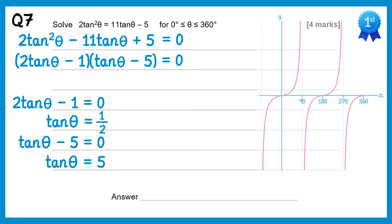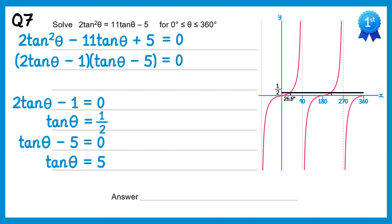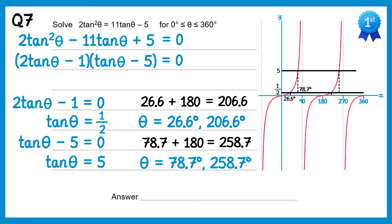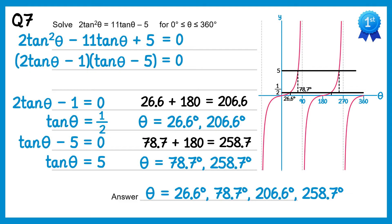Drawing the graph of tanθ and a line at 1/2: there are two solutions. Inverse tan of 1/2 gives 26.6 degrees, and adding 180 gives 206.6 degrees. For tanθ equals 5, drawing a line at 5: inverse tan of 5 gives 78.7 degrees, and adding 180 gives 258.7 degrees. Altogether there are four solutions: 26.6, 78.7, 206.6 and 258.7.